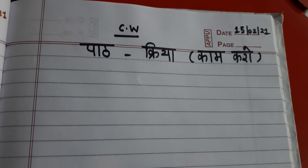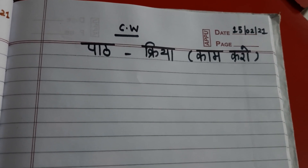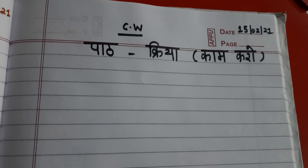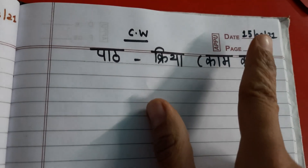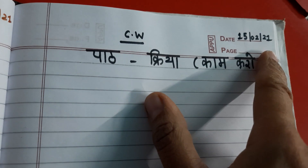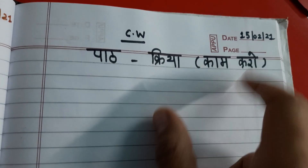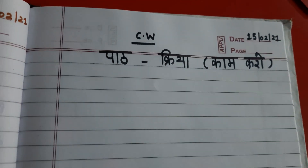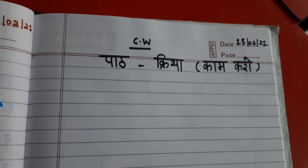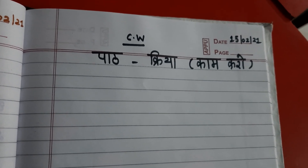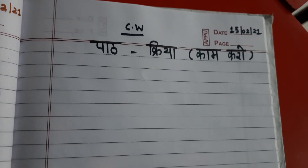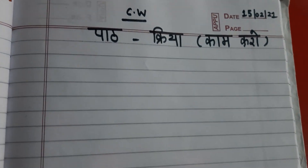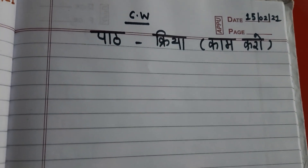So class, today we will do Kriya part based. We will do one more exercise in our notebook. Today is 15 February 2021. Now write down classwork. Then write down the name of the chapter: Kriya, and in bracket write down काम करो.